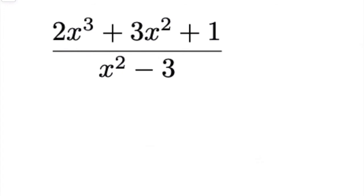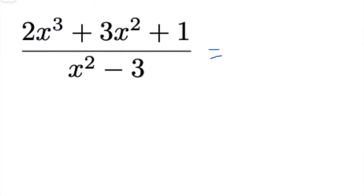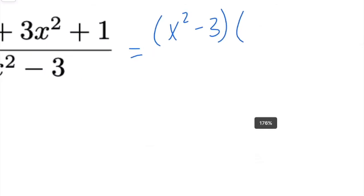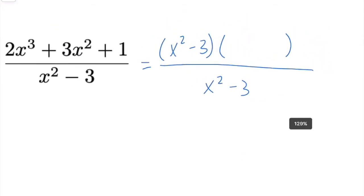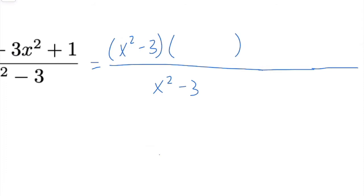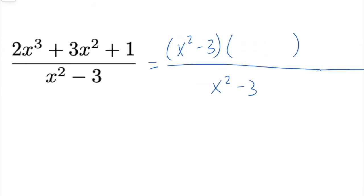I want to show that this method can work for more complicated fractions as well, including when you have some terms missing. Here we have an x cubed and an x squared term, but there's no x term, and in the denominator there's also no x term — it's just x squared minus 3. We know we want to factor the top as x squared minus 3 times something else, because there's an x squared minus 3 in the denominator. We'll leave extra space since it's not going to be a perfect factor.